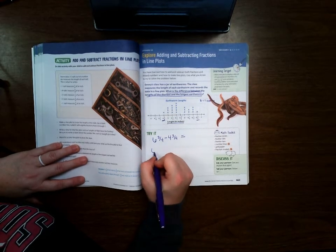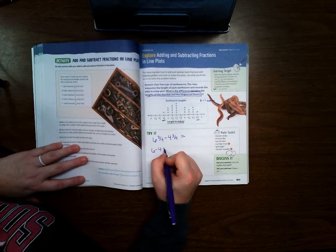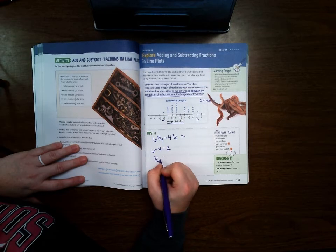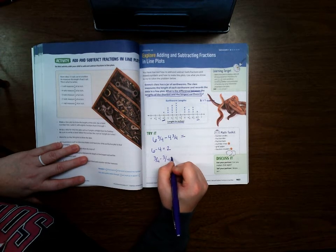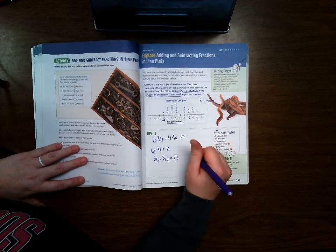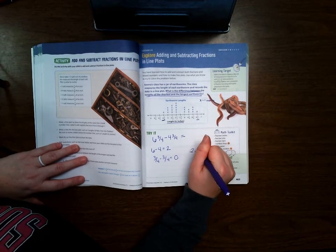So we can do six minus four, which is two, and three fourths minus three fourths, which is zero. So the difference between the largest and the smallest is two inches.